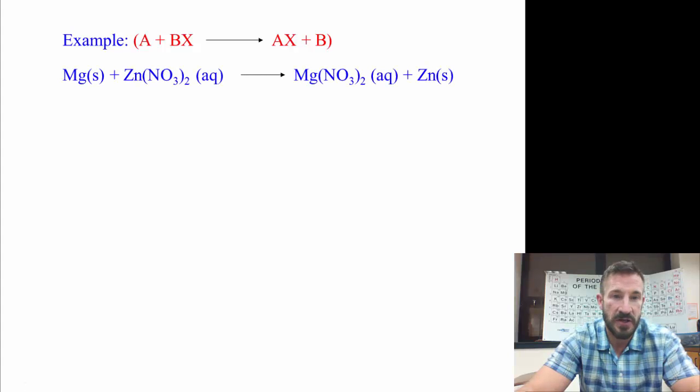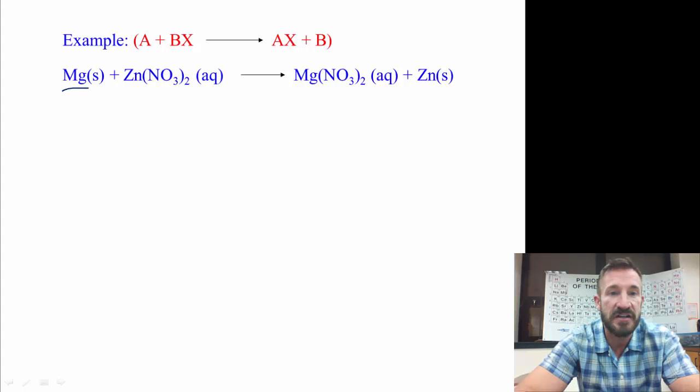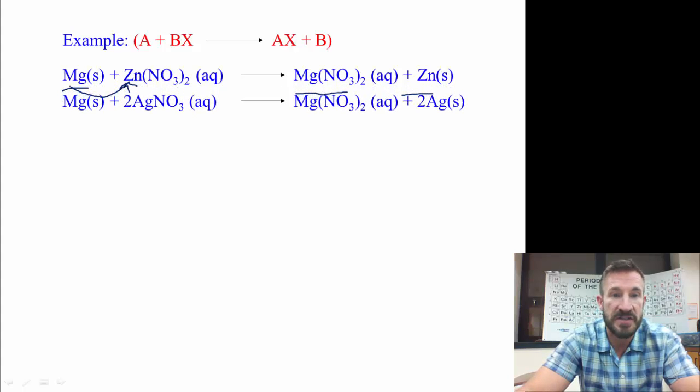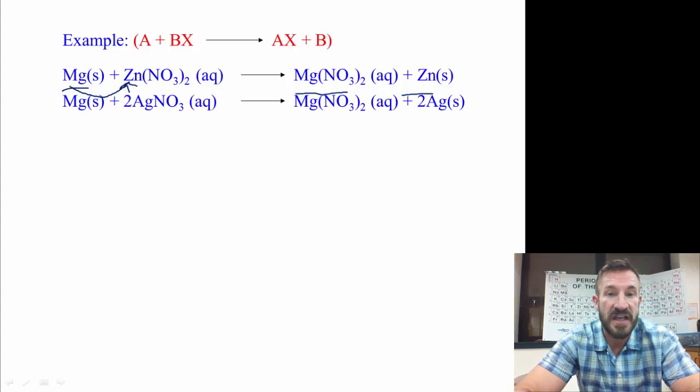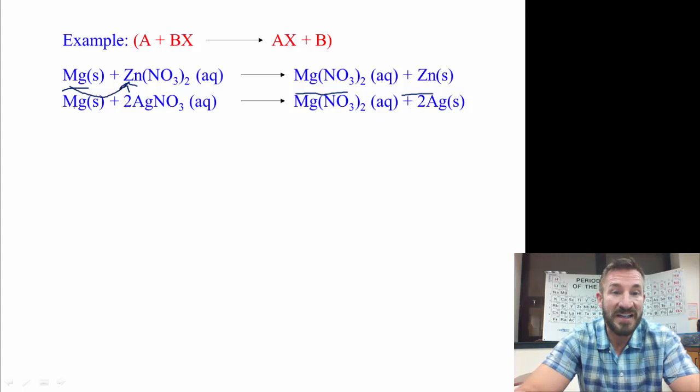So of course these are single displacement reactions. If you look here, we have magnesium is more active than zinc. So magnesium is able to displace zinc in the compound. So the products of this reaction are magnesium nitrate and zinc. Let's look at another example. Magnesium is more reactive than silver. So magnesium can displace silver in the compound, and then silver comes out as an element by itself.